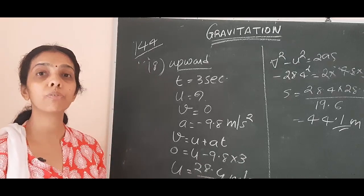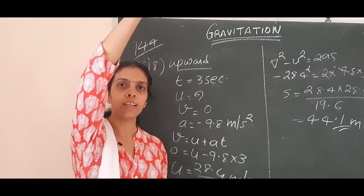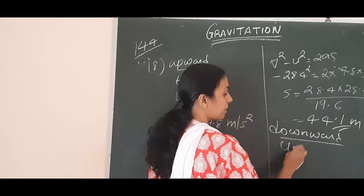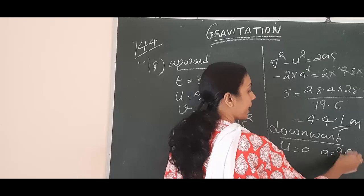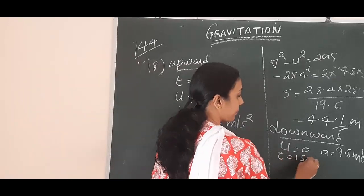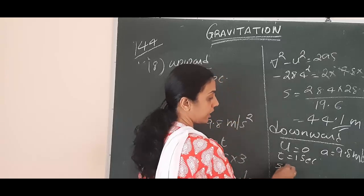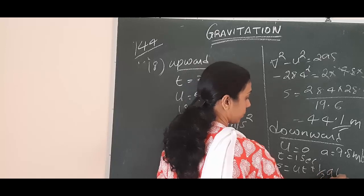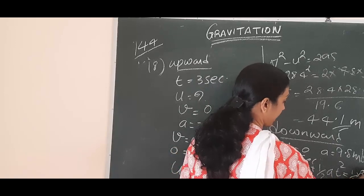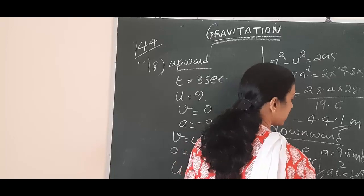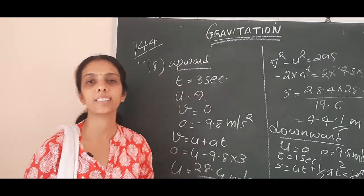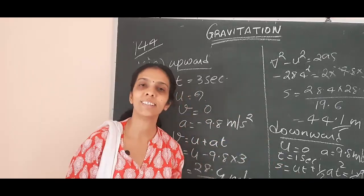For position after 4 seconds: the ball reaches maximum height in 3 seconds, then falls for 1 second in the downward direction. In downward direction, initial velocity is 0 and acceleration is 9.8 meter per second square. Distance in 1 second: S equals half into 9.8 into 1 square equals 4.9 meters. So after 4 seconds, the ball is 4.9 meters below the maximum height, having traveled downward for 1 second.